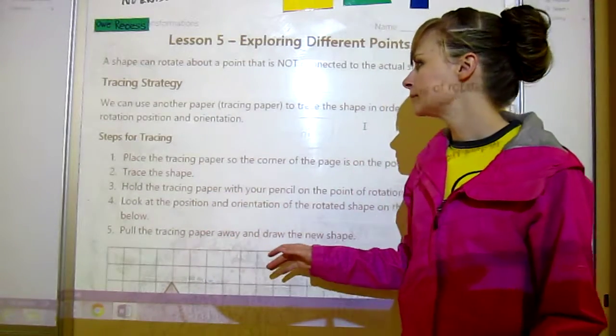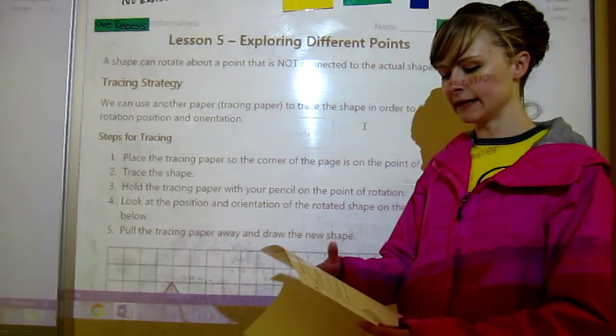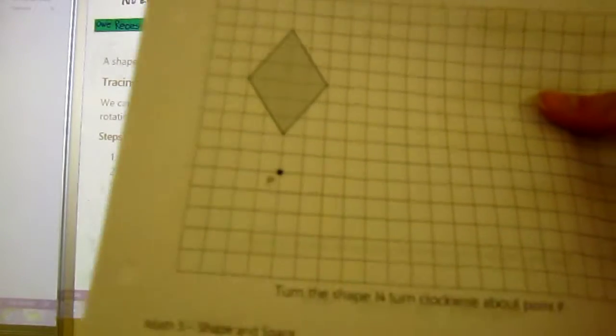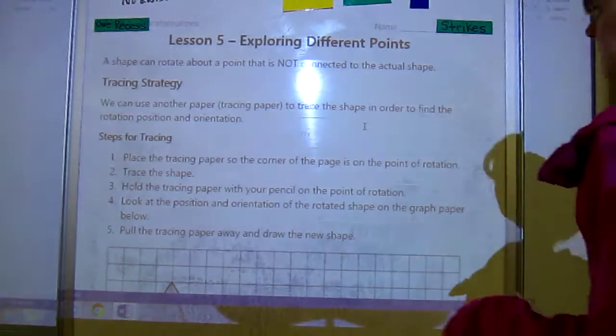This is based on rotating a shape about a point that is not connected to the shape. If you can see this right here, there is the shape and there's the point we're going to turn it about. It's not attached.